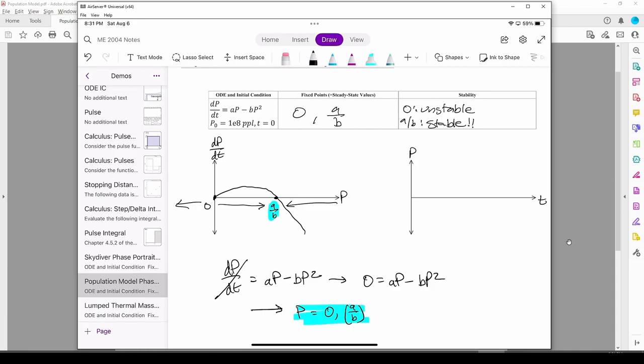Now we can draw the anticipated solution. The initial global population is some positive number, so we start from there and trend towards the steady state value of a/b.